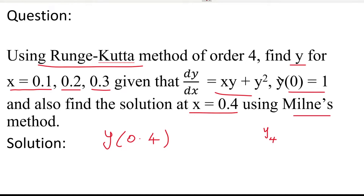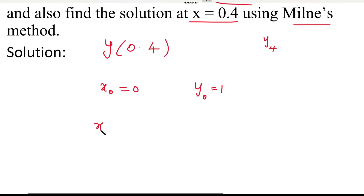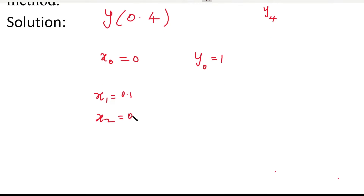We are given one condition: y(0) equal to 1. From this condition, x0 equals 0 and y0 equals 1. We need to find y1, y2, y3 corresponding to x1 = 0.1, x2 = 0.2, and x3 = 0.3, and their corresponding y values.